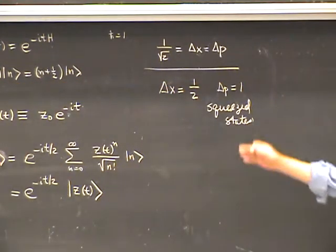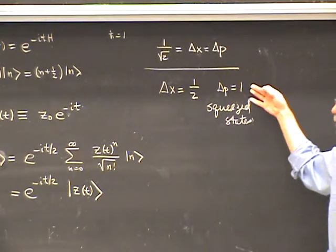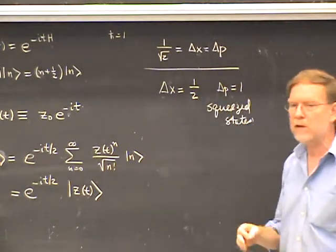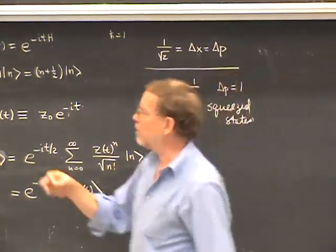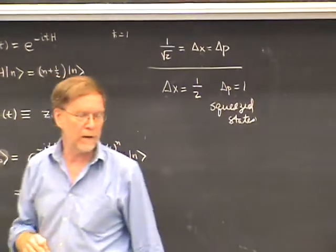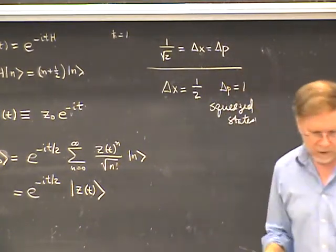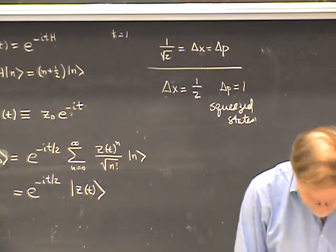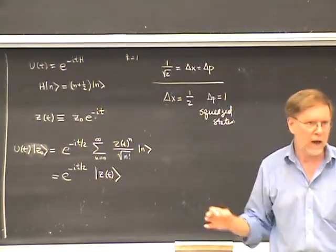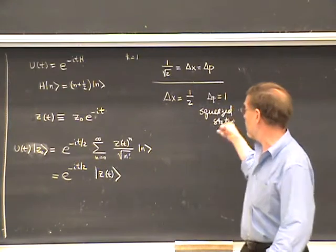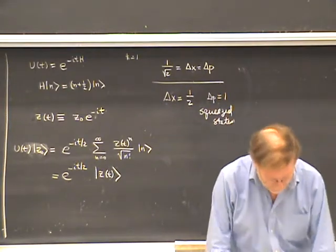If you go through a similar analysis for a squeezed state — which is more challenging — you'll find that the expectation values of delta x and delta p actually breathe in and out periodically, not with the period of the oscillator but with twice the period of the oscillator. There is a spreading and contracting in the wave packet, but it returns to a squeezed state with minimum uncertainty after a single cycle. If it weren't too hard to do this, I'd give it as a homework problem.